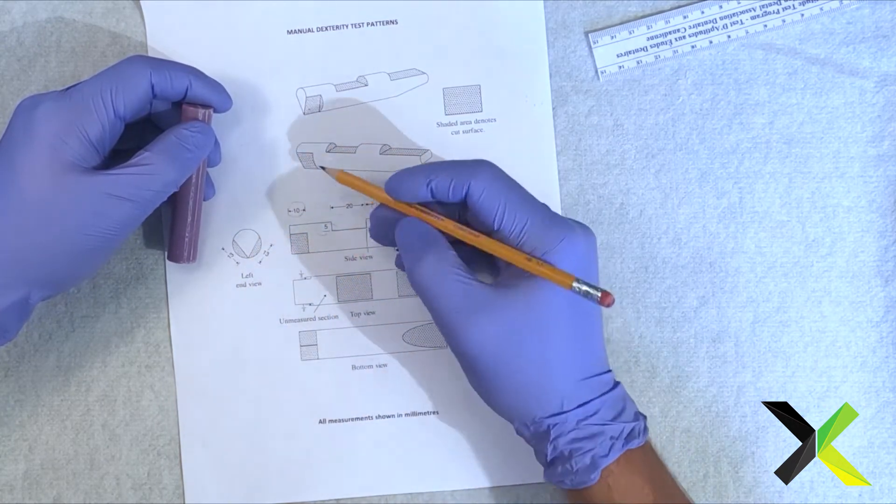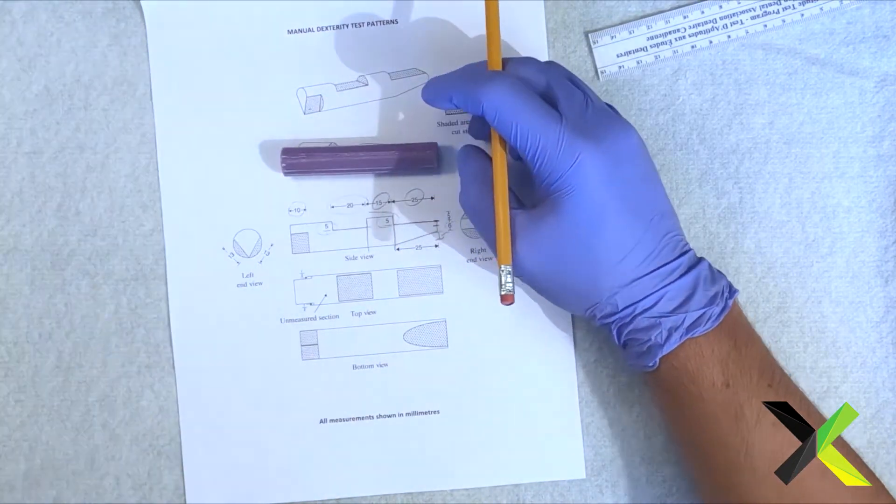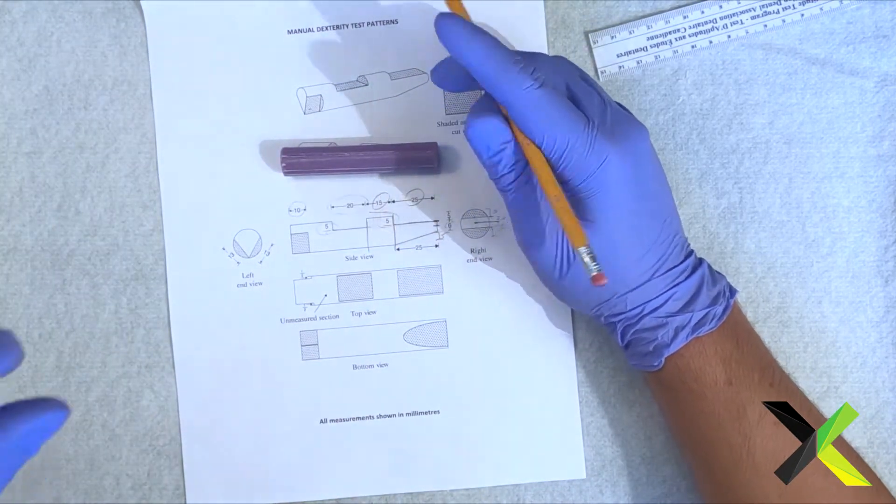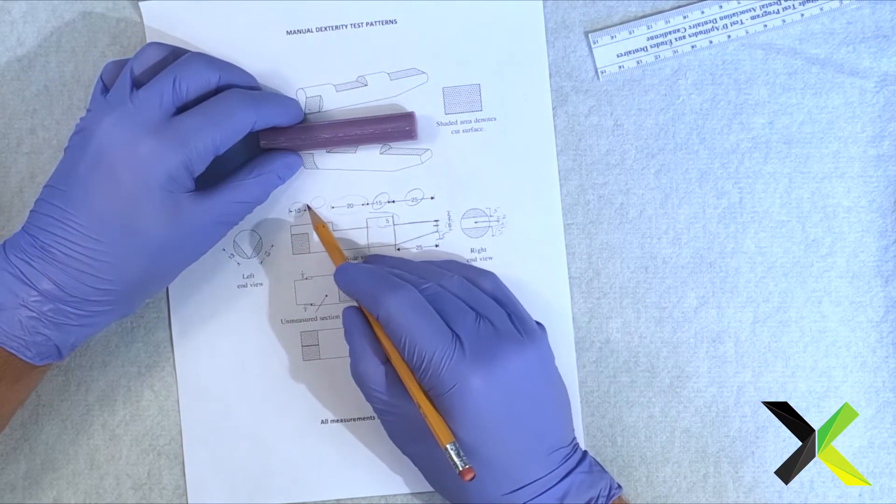But if you notice here, you have a dead zone. The reason they do that is because every soap is a bit different. One might be 83, one might be 84. They're pretty spot on, but this also gives you kind of a buffer right here.